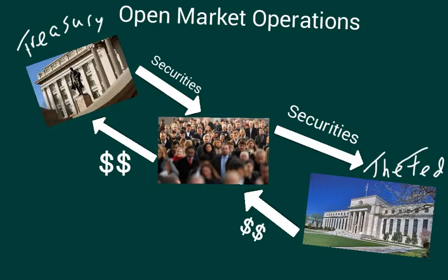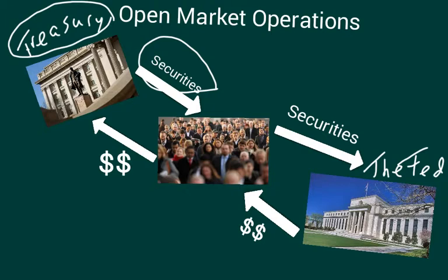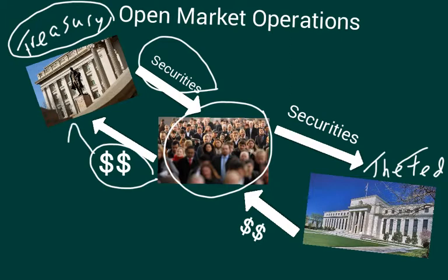How is the Fed able to buy securities, and how do these securities even get out there with the public? First of all, we have to realize that Treasury acts on behalf of Congress. They issue securities — bonds, notes, bills — because Congress and the White House run deficits; they spend more than they receive in tax revenue. So they sell or issue securities to the public.